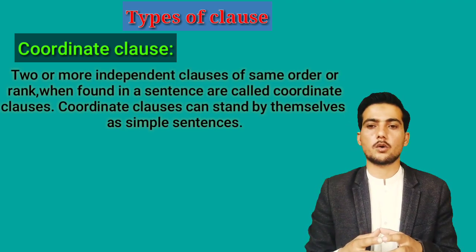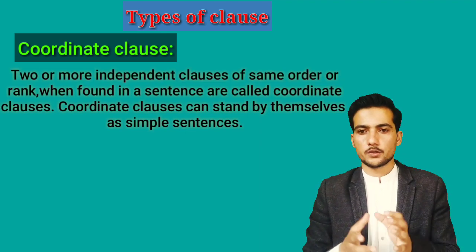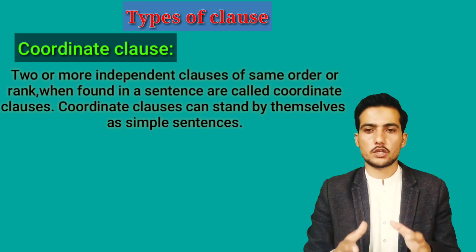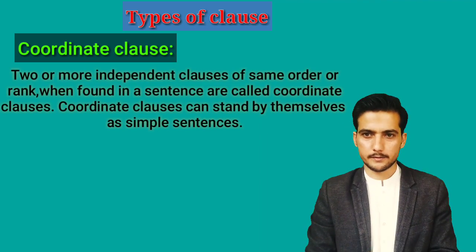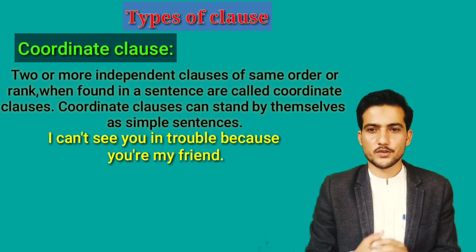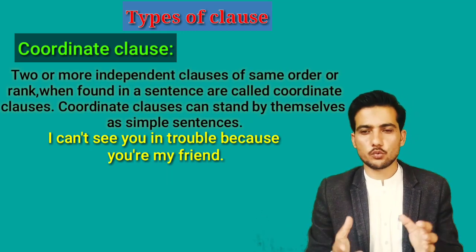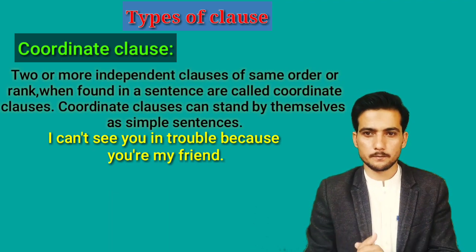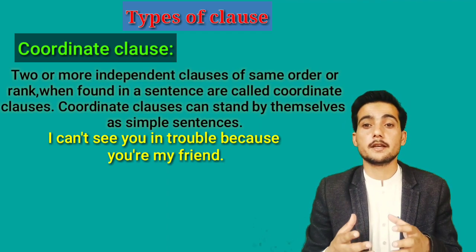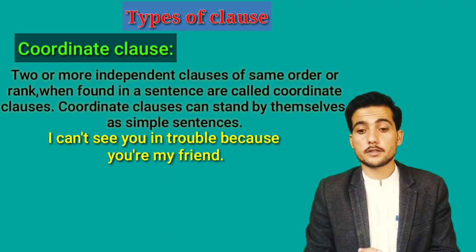Independent clauses are those which can stand alone as a sentence, so when those independent clauses are found in the same rank in a sentence, it is called a coordinate clause. For example: 'I cannot see you in trouble because you are my friend.' This consists of two clauses. 'I cannot see you in trouble' gives complete sense — it is an independent or main clause.